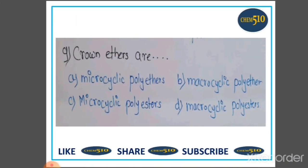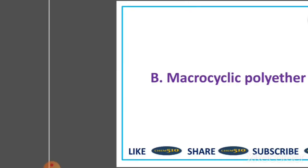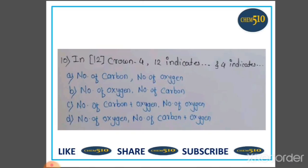Ninth question: Crown ethers are — Option A: micro cyclic polyethers, B: macro cyclic polyethers, C: macro cyclic polyesters, D: macro cyclic polyesters. Option B is correct: macro cyclic polyethers. Tenth question: In 12-crown-4, 12 indicates ____ and 4 indicates ____. Four options are given.